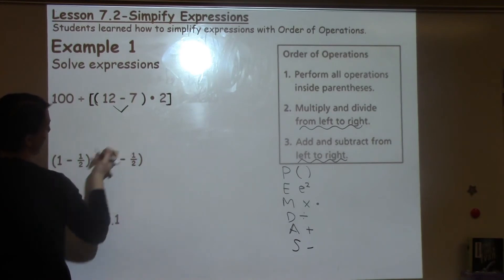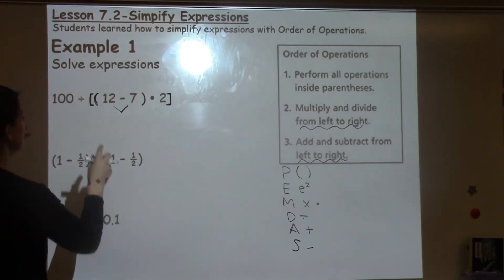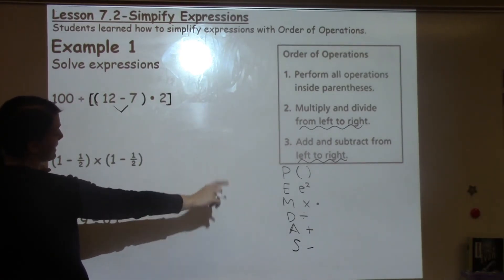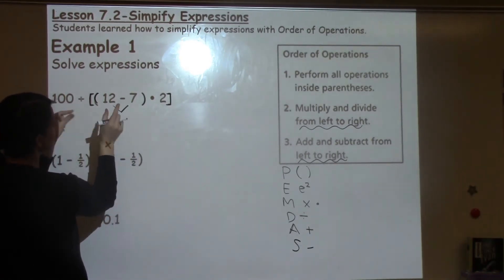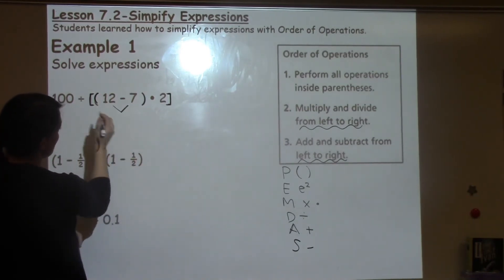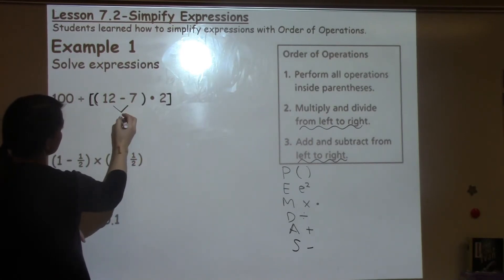So the first thing I'm going to do is 12 minus 7. And we encourage students when they are doing a long expression and they are following the order of operations to use this V symbol or this caret symbol to help them bring down their answer and then rewrite everything. So 12 minus 7 I know is 5.